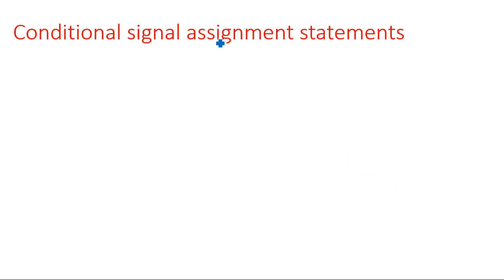In this video I am going to explain conditional signal assignment statements and selected signal assignment statements. In the previous video, for behavioral modeling in the process statement, we use conditional statements like if-else. If you want to write the same conditional assignments in data flow modeling, there are two models available: one is conditional signal assignment and another is selected signal assignment. Both are used for conditional assignments.